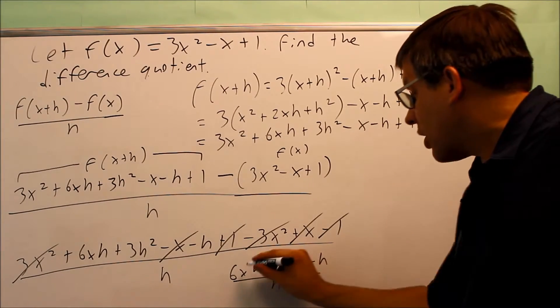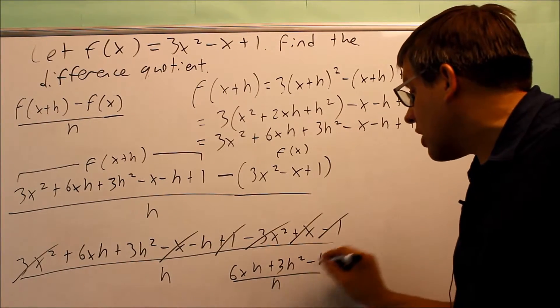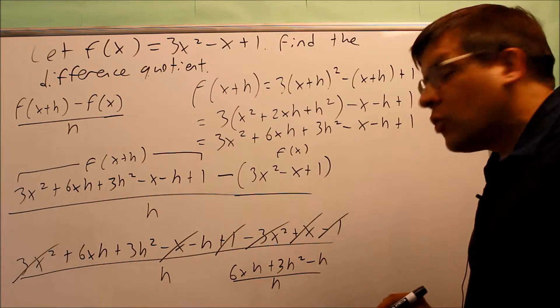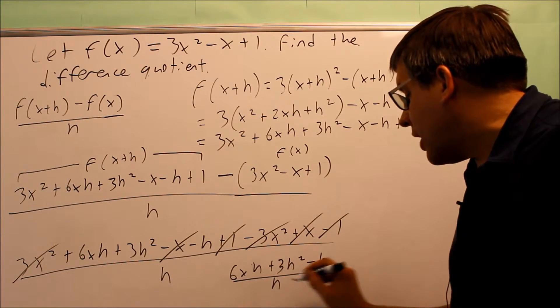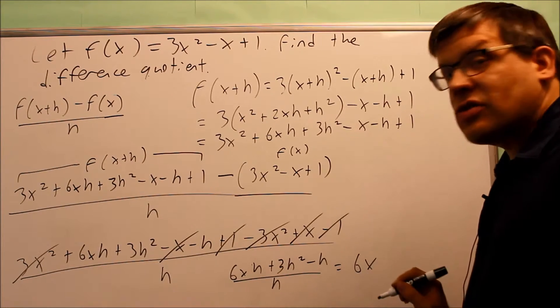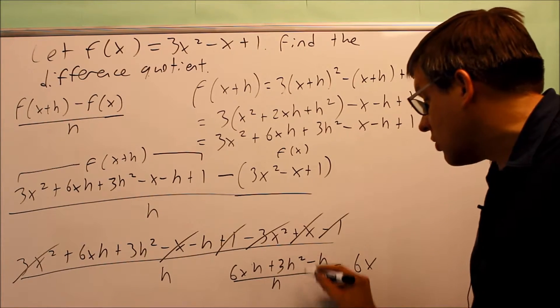The last thing you want to do is, because everything has an h in it, you can actually cancel an h out with each one. So if I have 6xh and I divide that by h, that means that I'll get 6x left over. These h's cancel.